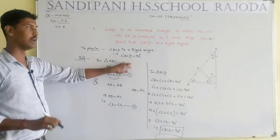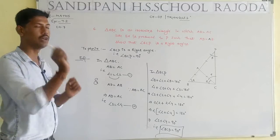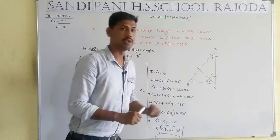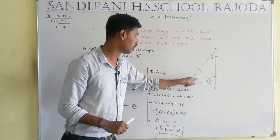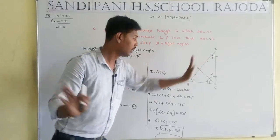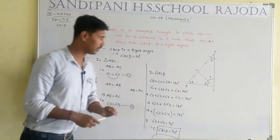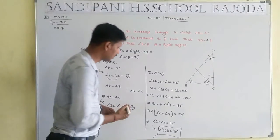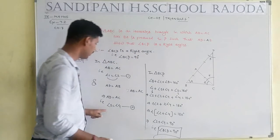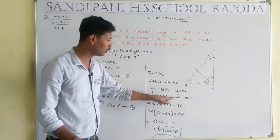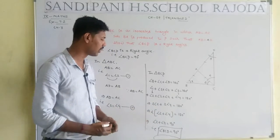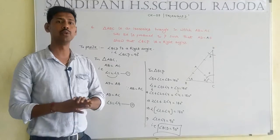Let's recap: AB equals AC gives angle 1 equals angle 2; AD equals AC gives angle 3 equals angle 4. In triangle BCD, replacing angle 1 by angle 2 and angle 3 by angle 4, we get 2 times angle 2 plus 2 times angle 4 equals 180, so angle 2 plus angle 4 equals 90 degrees. Therefore angle BCD equals 90 degrees — hence proved.